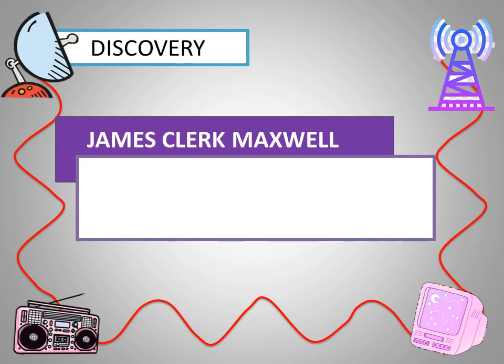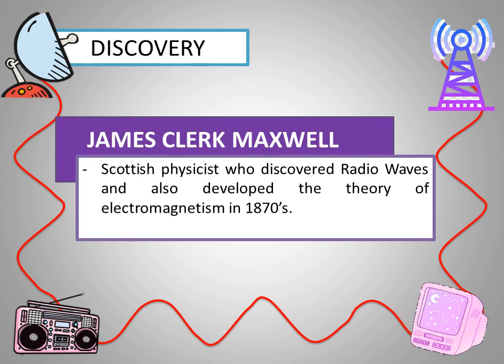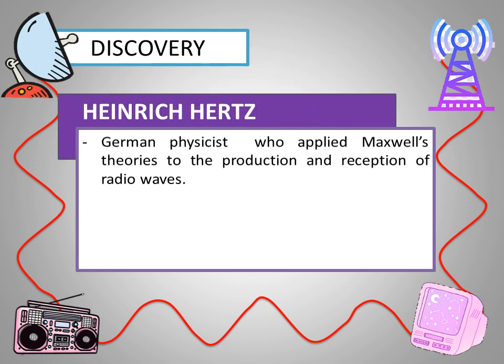James Clerk Maxwell is a Scottish physicist who discovered radio waves and also developed the theory of electromagnetism in the 1870s. Another person who contributed to the discovery of radio waves is Heinrich Hertz, a German physicist who applied Maxwell's theory to the production and reception of radio waves.